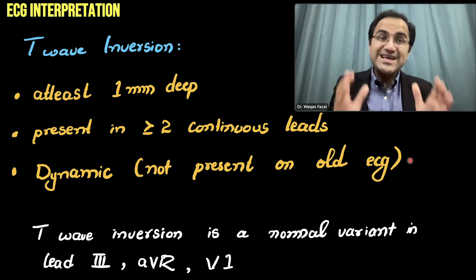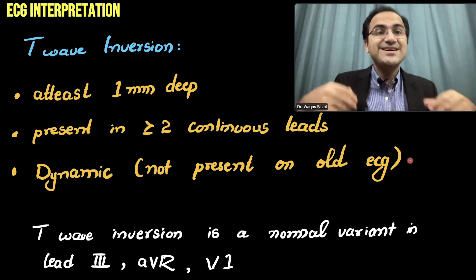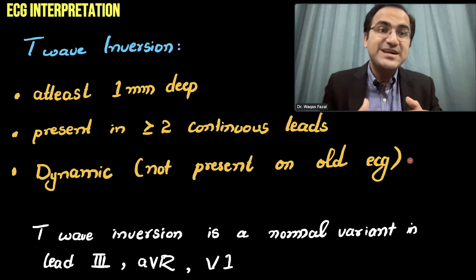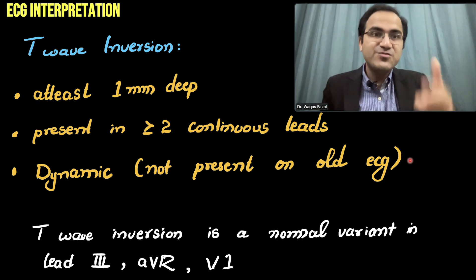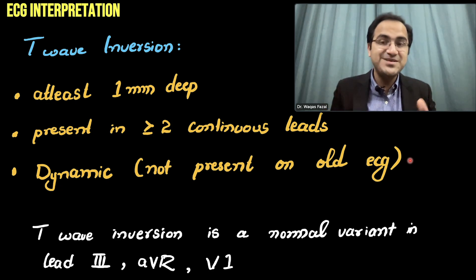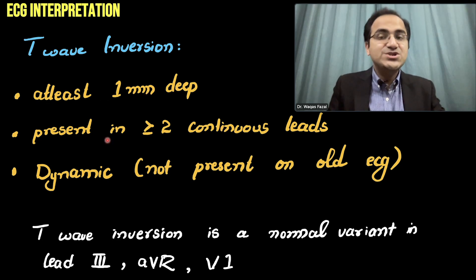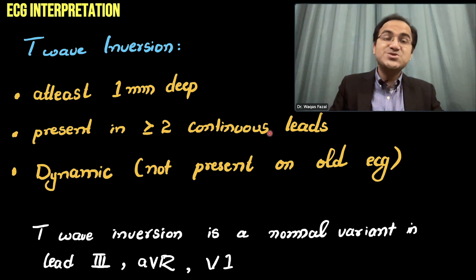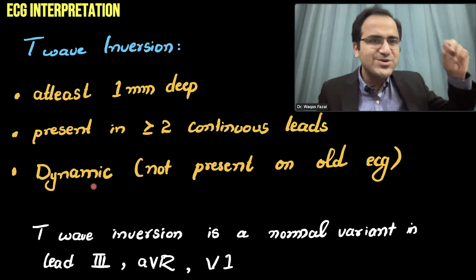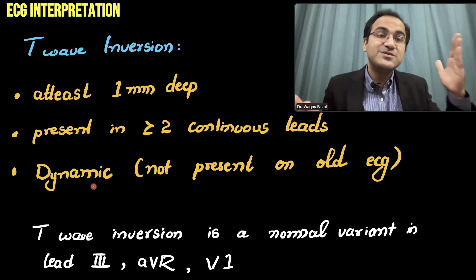An important point: along with ST segment depression, T wave inversion also indicates subendocardial ischemia. Sometimes in the initial phase when ischemia is developing and blood supply is obstructed, before ECG shows ST segment changes, the initial change is T wave inversion. T wave inversion must be taken seriously if the patient is symptomatic. It should be at least 1mm deep (one small box), present in two or more contiguous leads, and it should be dynamic — meaning it was not present on the patient's previous ECG.